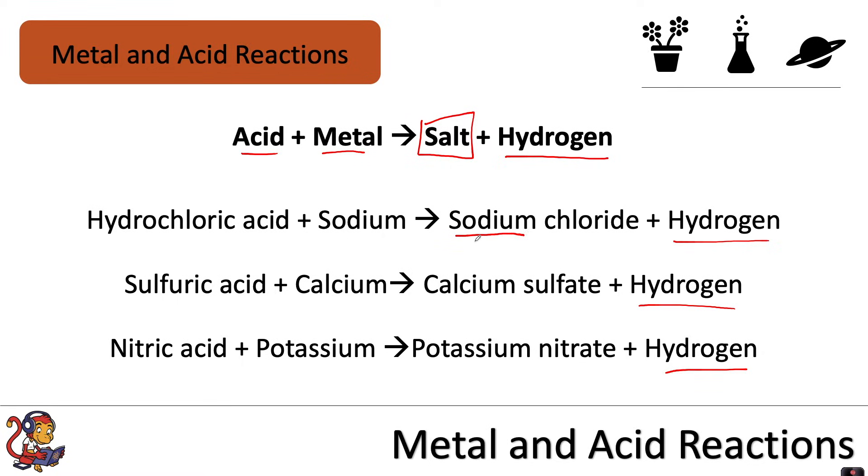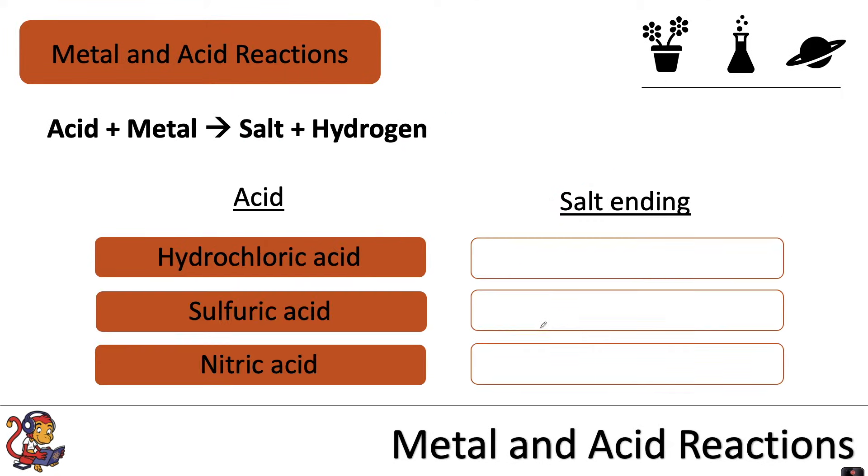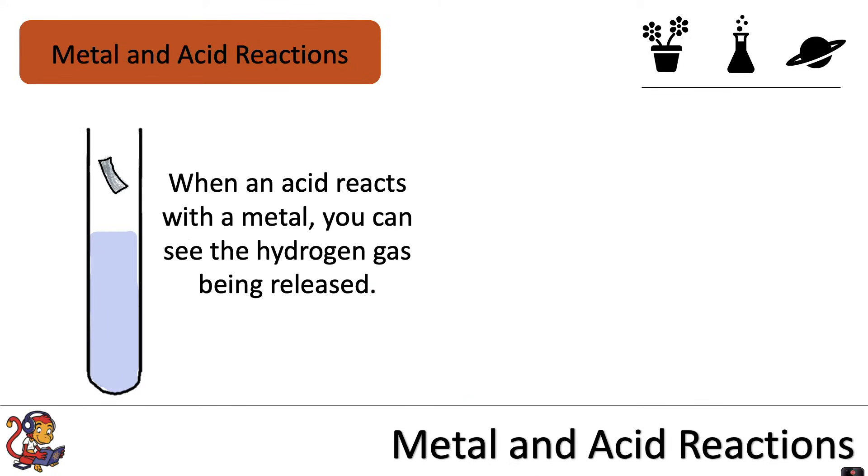The salt will always start with the name of the metal that you've used, and the salt ending—chloride, sulfate, and nitrate—will depend on the acid that you've used. If you use hydrochloric acid, your salt ending will be chloride. If you use sulfuric acid, your salt ending will be a sulfate. And if you use nitric acid, your salt ending will be a nitrate.